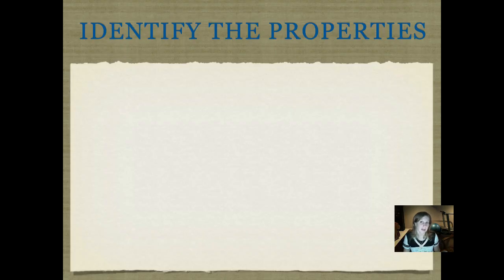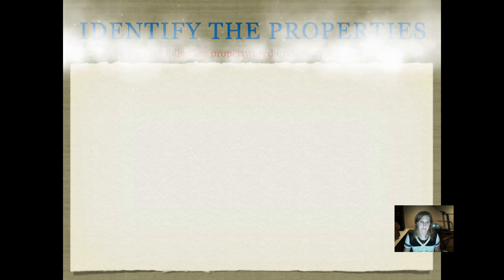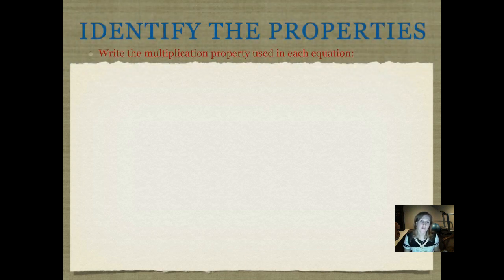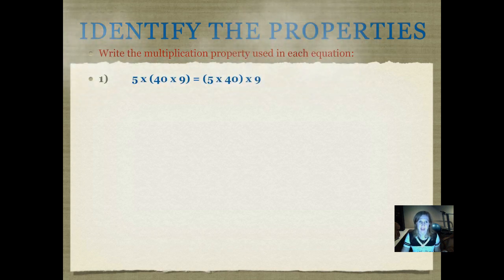Now we're going to practice identifying the properties. In your journal, you're going to write down the multiplication property used in each of the following equations. Pause and push play when you have it written in your journal. Remember, you can go back to your vocabulary definitions if you can't remember the names of all the properties.